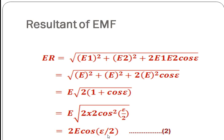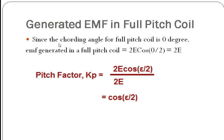If you solve this equation, you will get EMF available at the terminals of the short pitch coil to be equal to 2E cos(zeta/2). Now let us calculate the EMF generated in a full pitch coil. The cording angle for a full pitch coil is equal to 0, so if we put 0 in place of zeta, the EMF generated in the full pitch coil will be equal to 2E cos(0/2), which equals 2E. According to the definition of pitch factor, Kp equals 2E cos(zeta/2) divided by 2E, which equals cos(zeta/2). Therefore, the formula for pitch factor is Kp = cos(zeta/2).